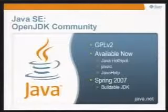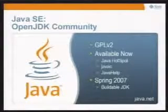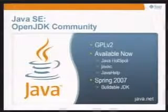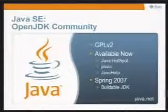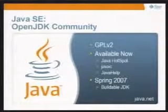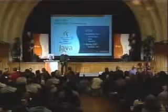Hotspot, the core technology engine itself, Java C the compiler, the bytecode generator, and the Java help technology. And by the end of the first quarter, we'll have fully buildable JDK technology. There are pieces that are rolling out over the next couple of months, but we're moving very quickly. Again, all available in the community at java.net.